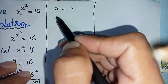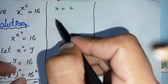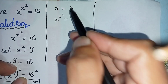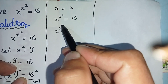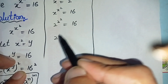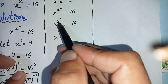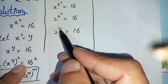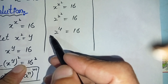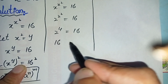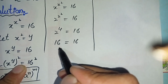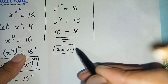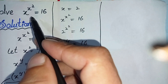We write the exponential equation again: x raised to the power x² is equal to 16. Replacing x with 2, it becomes 2 raised to the power 2² is equal to 16. Since 2² equals 4, this is 2 raised to the power 4, which equals 16. So 16 equals 16 — both sides are equal, confirming x equals plus 2 is the correct root.